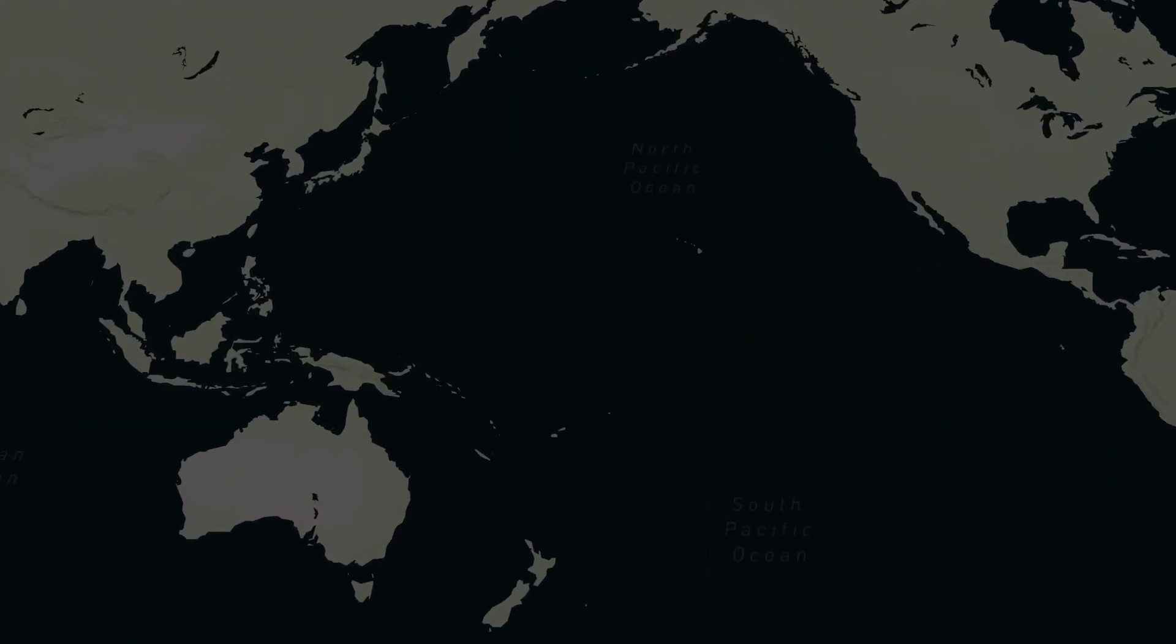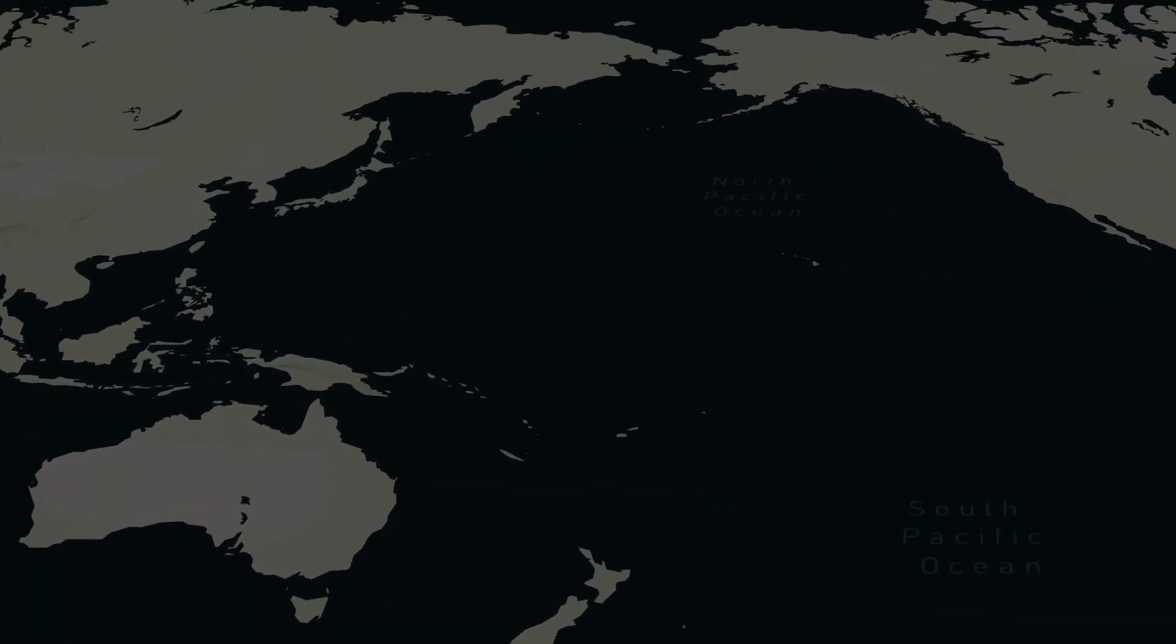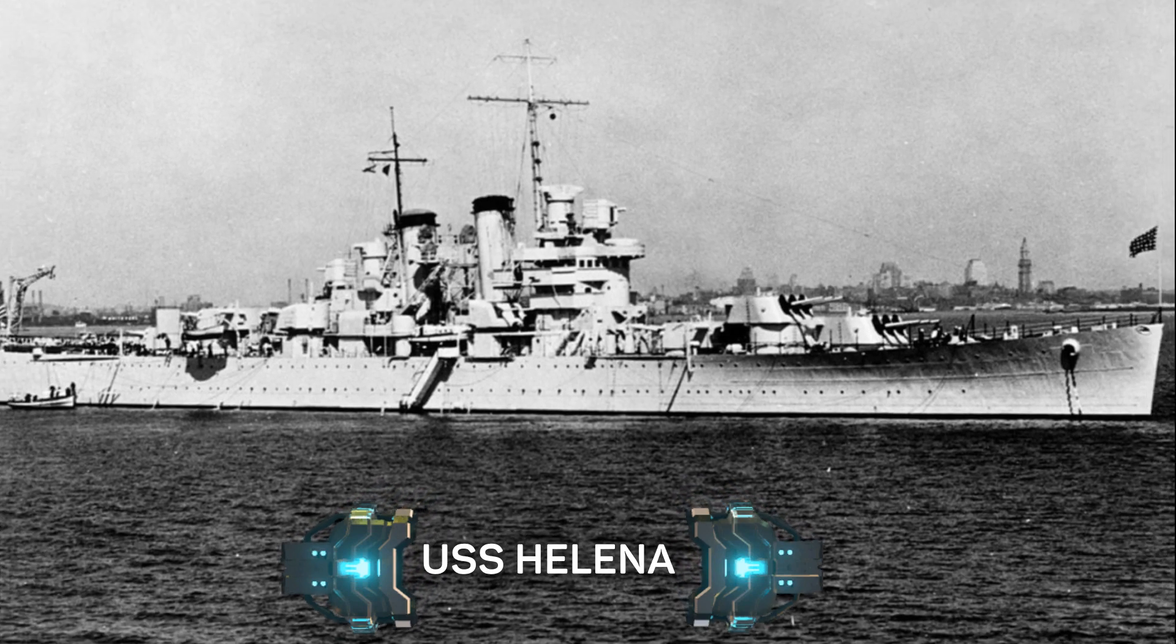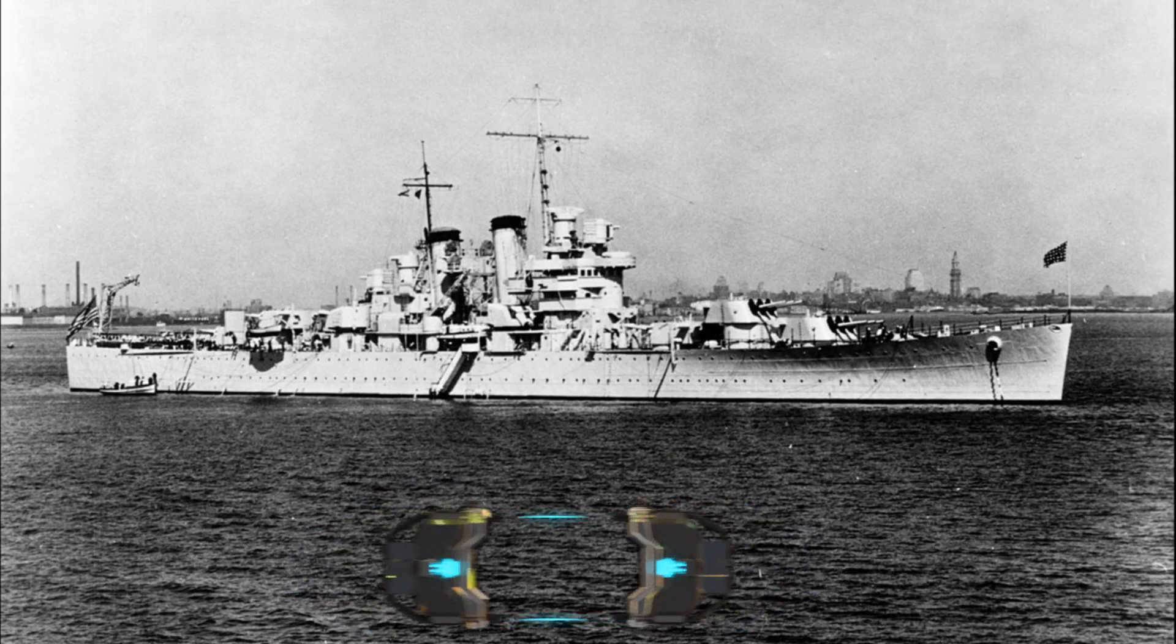The proximity fuse shells were first used in 1942 at Guadalcanal in Pacific, where USS Helena, one of the first of the three ships to receive it, fired on a Japanese dive bomber heading for its task force. The Helena fired two rounds and the fuse's first victim burst into flames before plunging to a watery grave.